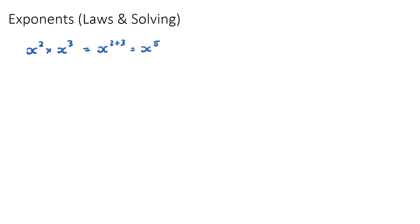The way I remember this is x squared is actually just x times x, and x cubed is just x times x times x. If I'm multiplying all of those together I have x to the power of 5. So that's why the rule is: if we're multiplying terms that have the same base with different powers, we add the powers.